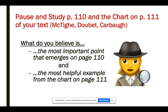I want you to pause and study pages 110 and 111 — specifically the chart on page 111 of your Designing Authentic Tasks and Performance texts, the McTighe, Bay, and Carbaugh text that you have the hard copy of. What do you believe is the most important point that emerges on page 110? And what do you think is the most helpful example from the chart on page 111? Pause and think about that — we'll talk about this in our meeting.